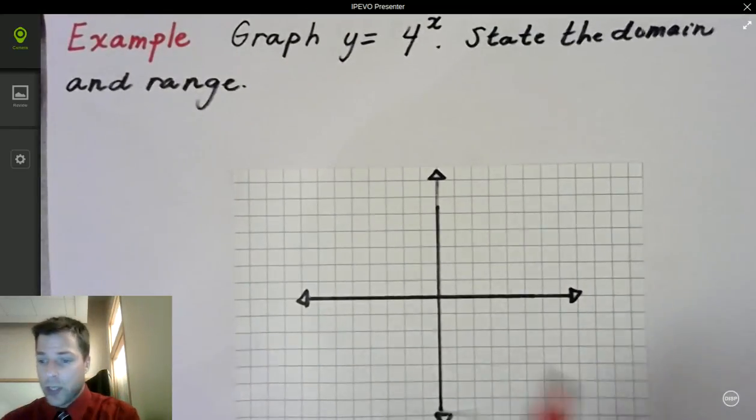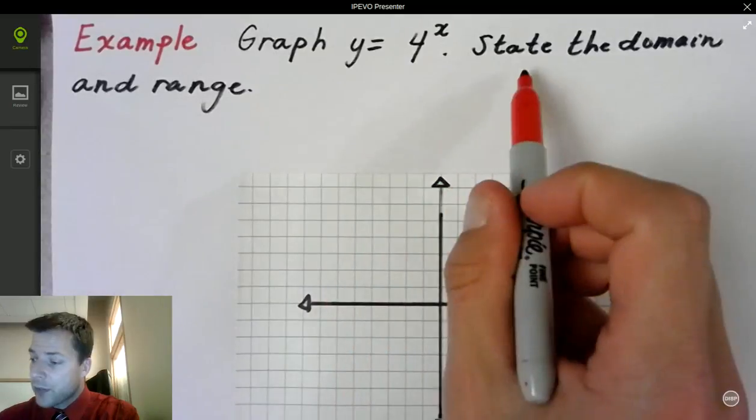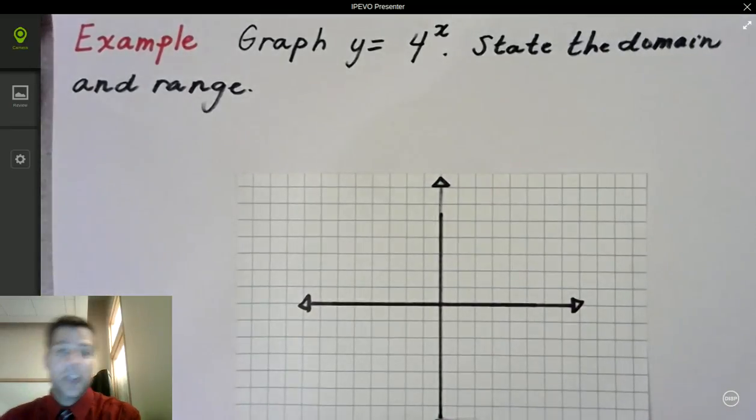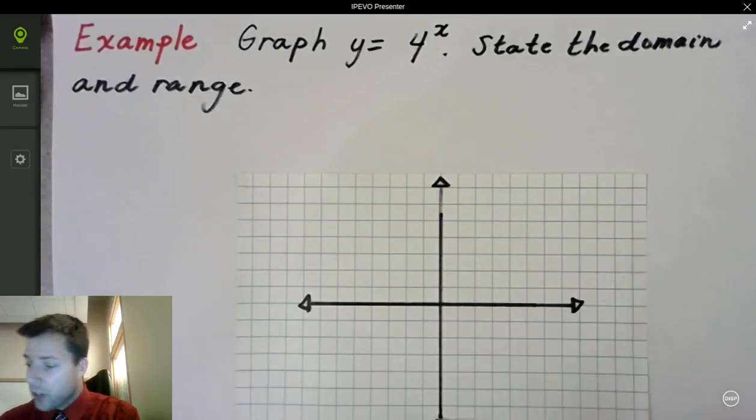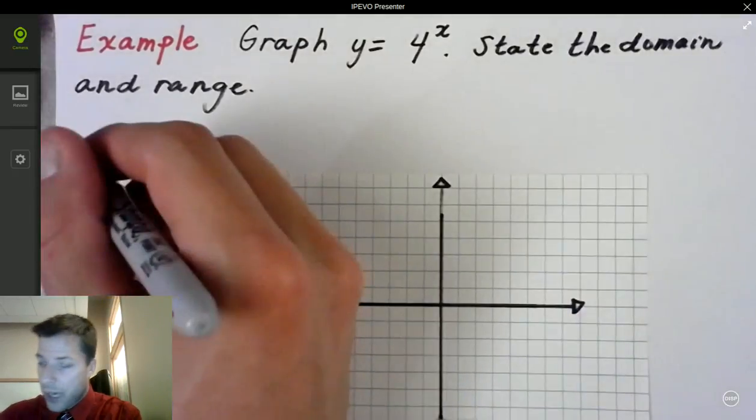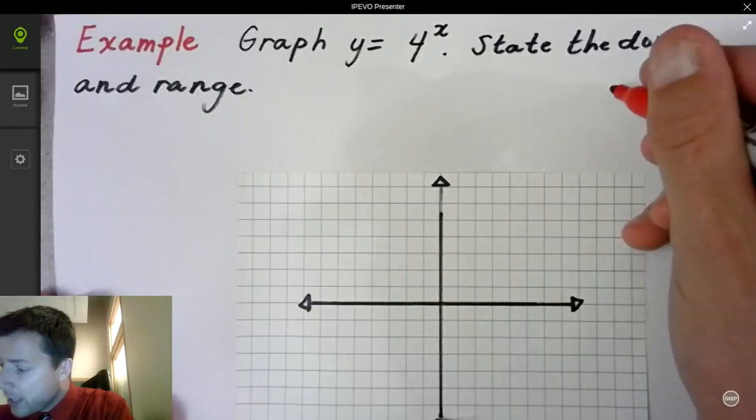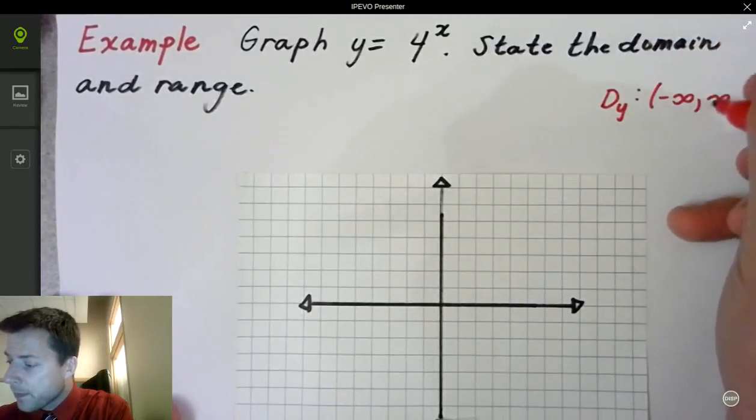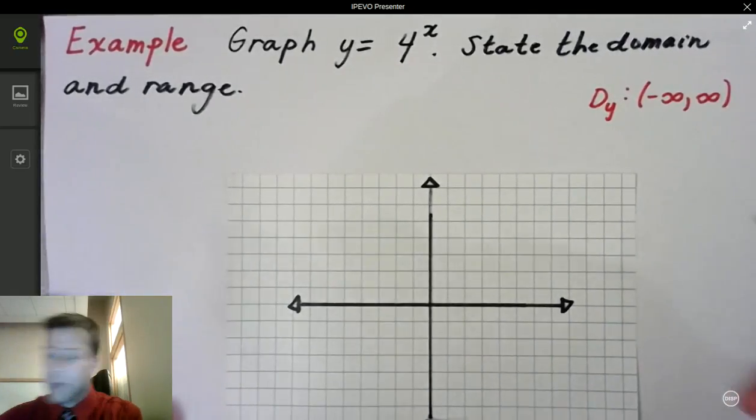The first function is we're going to sketch the graph of y equals 4 to the x and state the domain and range. The domain and range is pretty simple. The domain of y is going to be all real numbers. It's an exponential function, that's what we know.